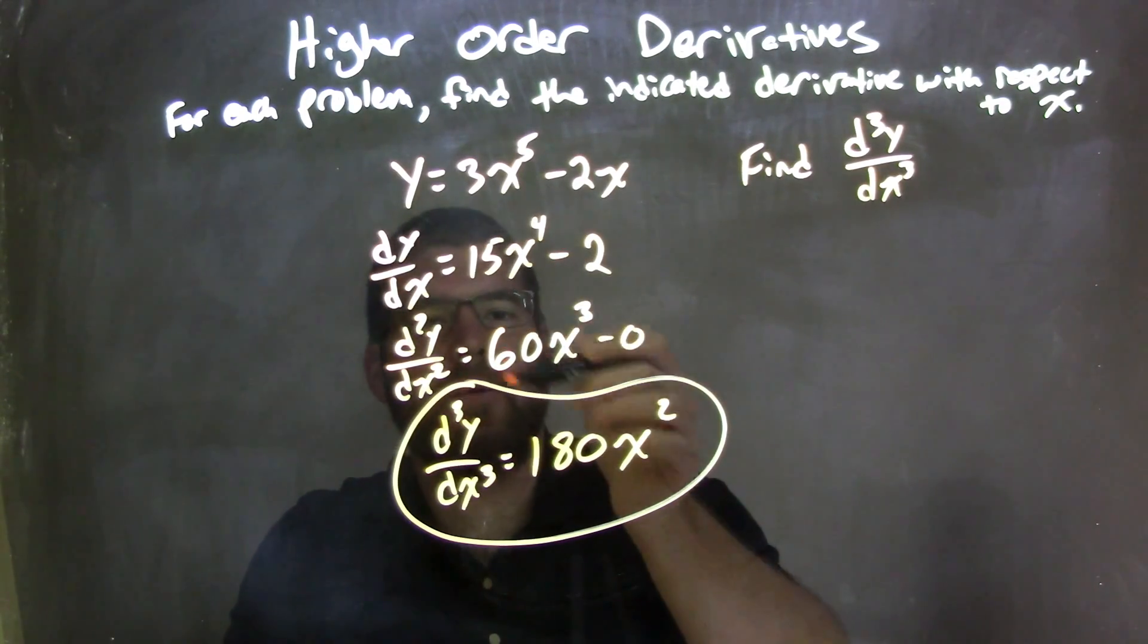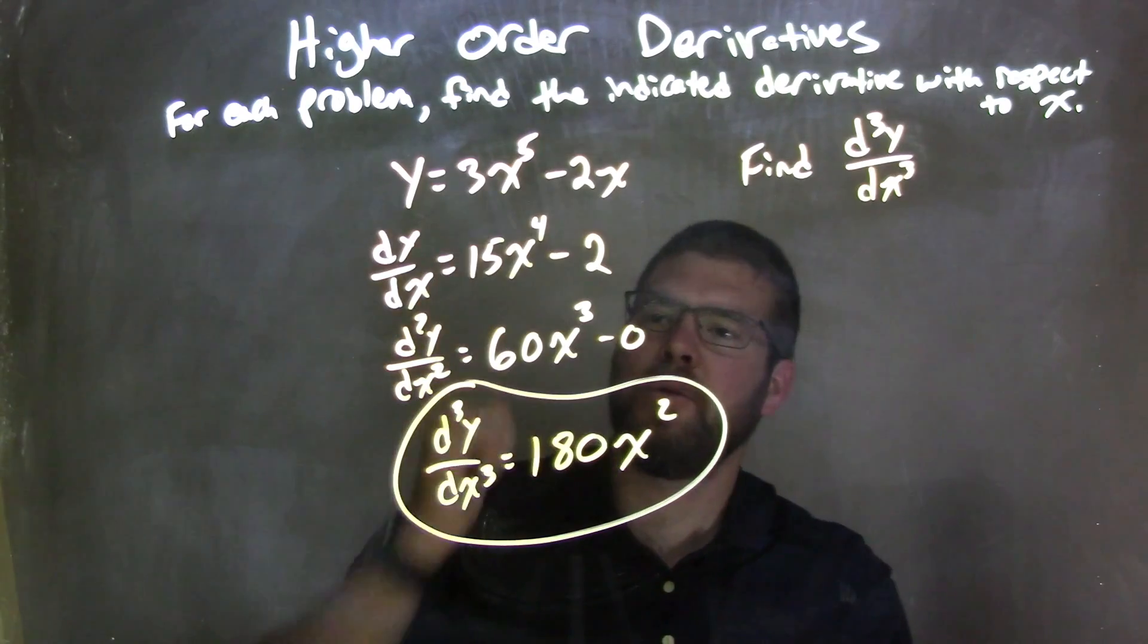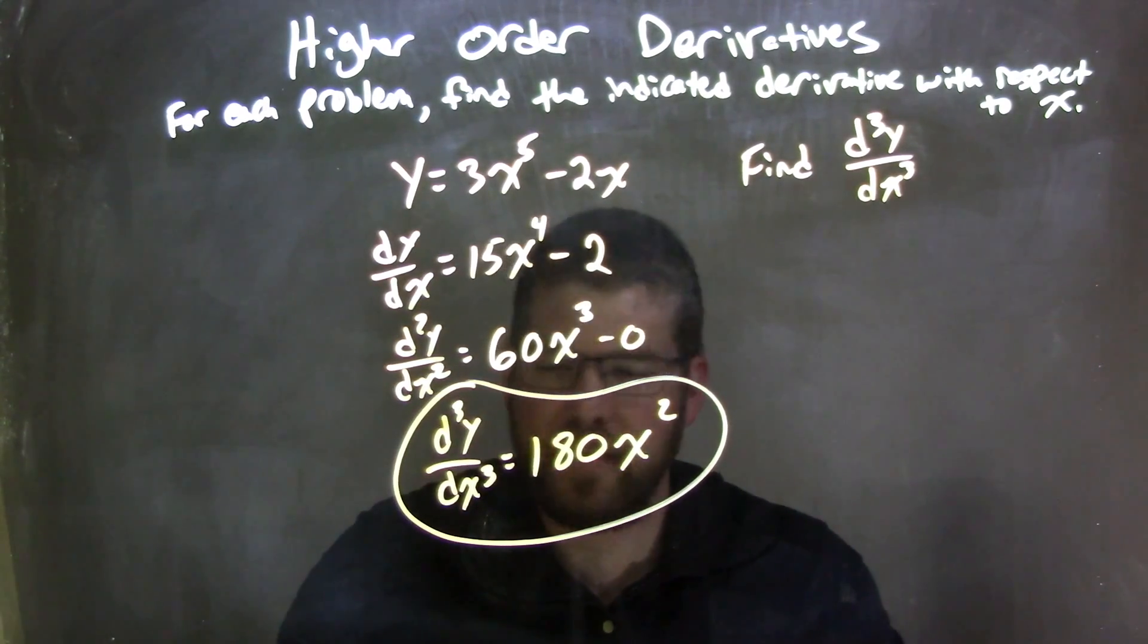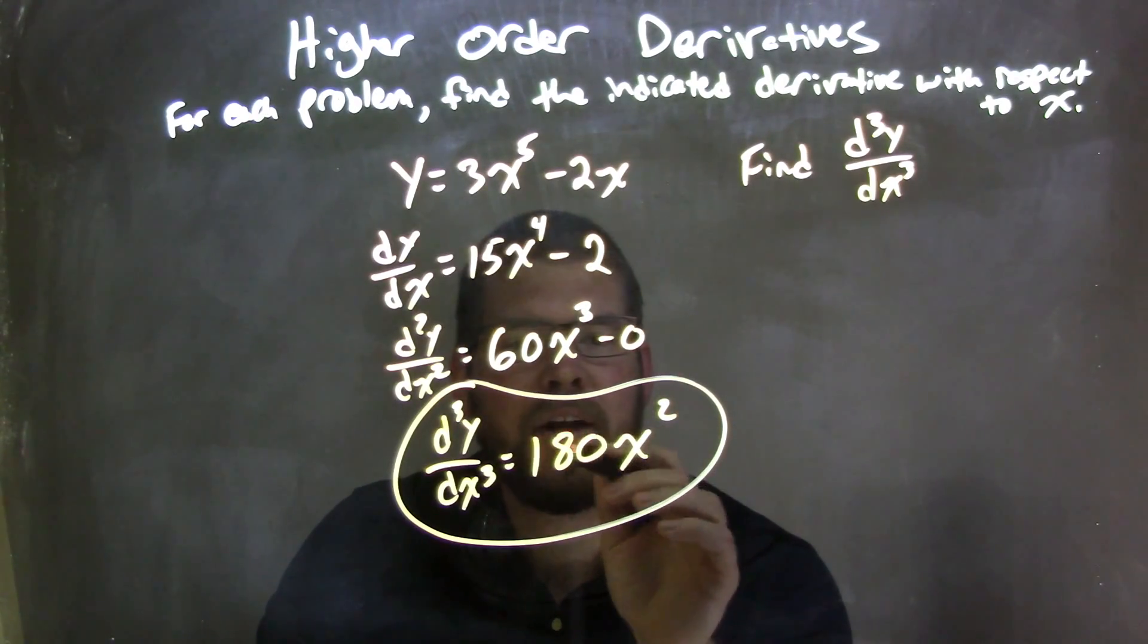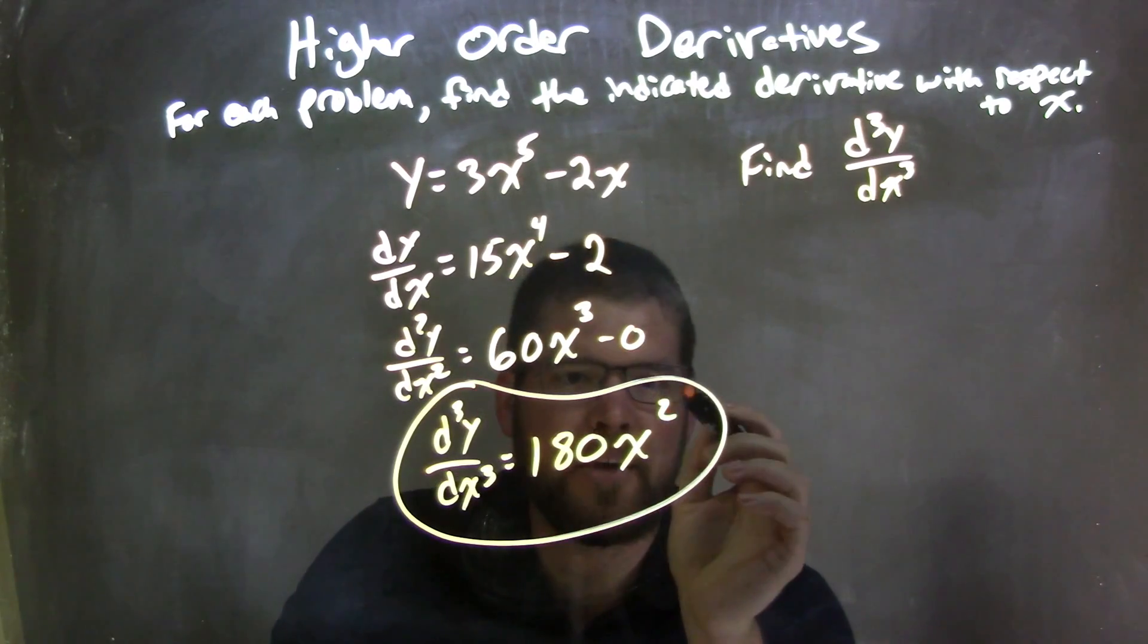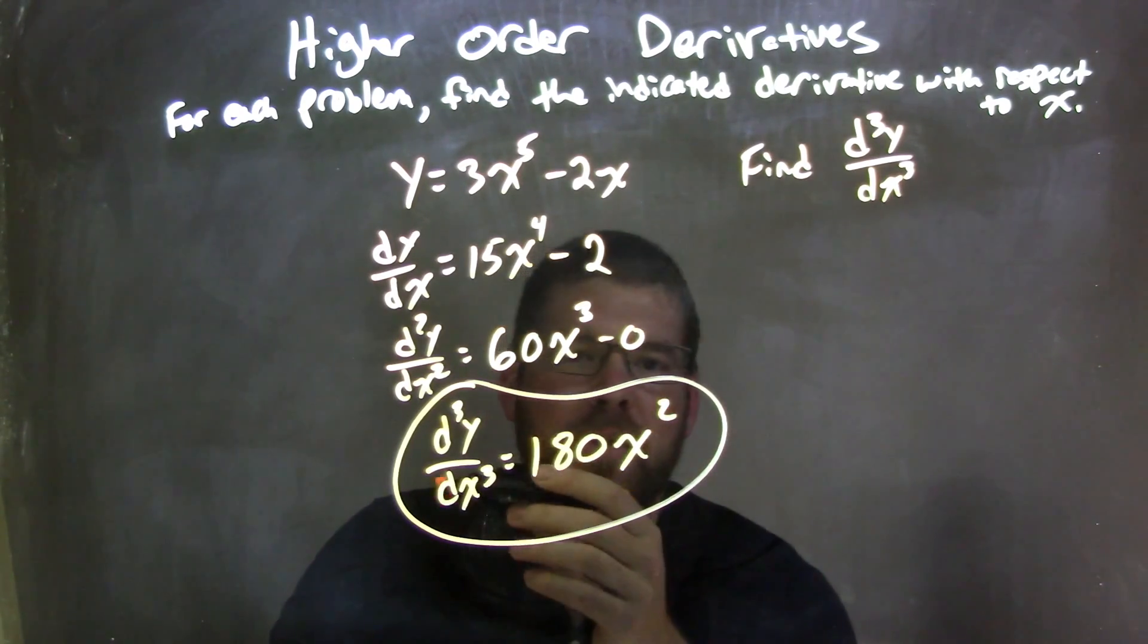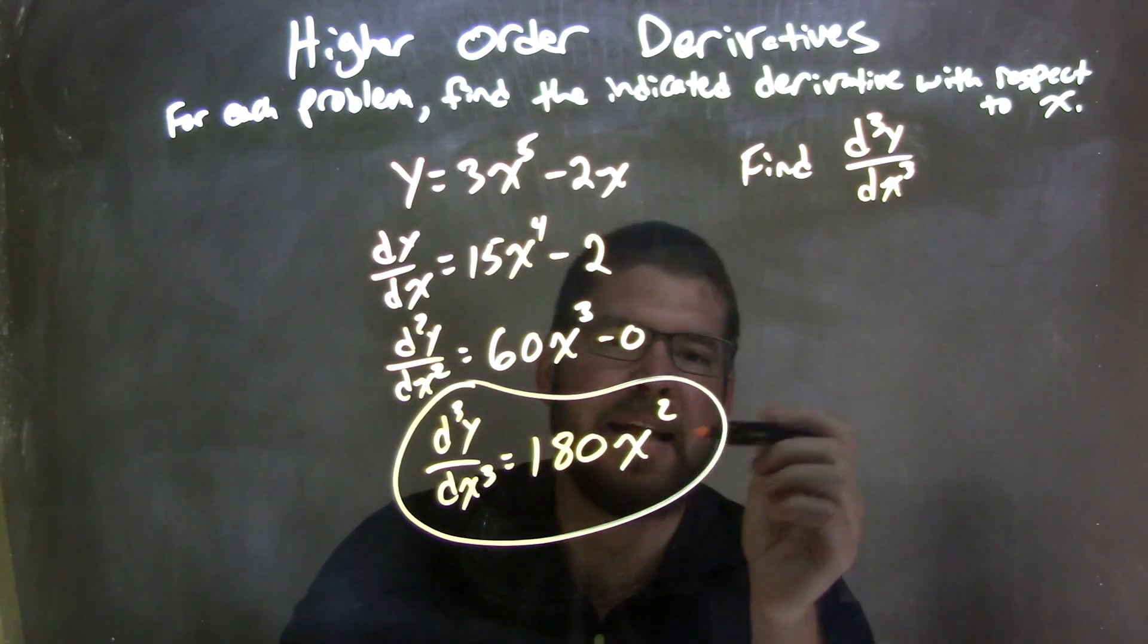But again, the exponents come down, multiply by what's up front. We subtract the exponent by 1. Lastly, we do the power rule not 2, but 3 times. And we have the third derivative here, the third power rule being used. And we have 180x squared by bringing 3 times 60 is 180. And the exponent gets subtracted by 1. So our final answer here is d to the third power of y over dx to the third is equal to 180x squared.